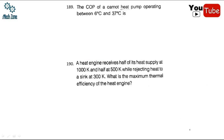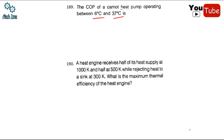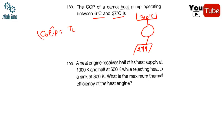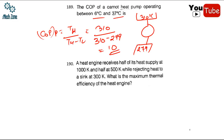COP of heat pump operating between T_high = 310 K and T_low = 279 K: COP_pump = T_high / (T_high - T_low) = 310 / (310 - 279) = 310/31 = 10.